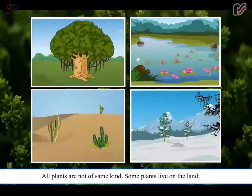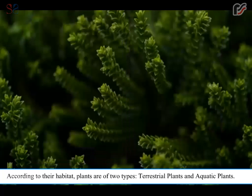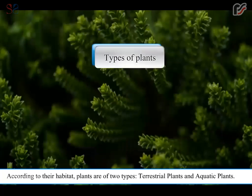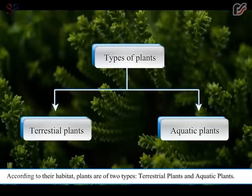All plants are not of the same kind. Some plants live on the land, some live in water, some float on water, some are in deserts, some are on mountains, and some are in cold regions. According to their habitat, plants are of two types: terrestrial plants and aquatic plants.